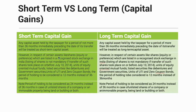For certain assets like equity shares and preference shares listed on the National Stock Exchange or Bombay Stock Exchange in India, units of equity-oriented mutual funds, securities like debentures and government securities, units of UTI, and zero coupon bonds, the period of holding is considered to be 12 months instead of 36 months.